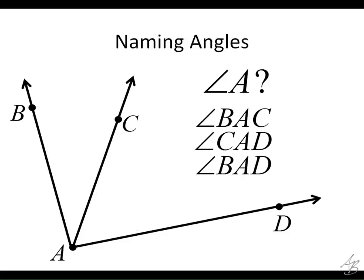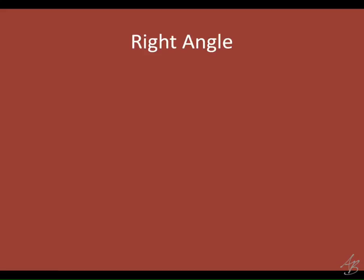Using B-A-D — that looks like it could be a right angle, close to 90 — that would be this whole big angle. So the key point is: we can use just one letter when there's only one angle at a vertex. But if there's more than one angle at a vertex, we need three letters to be clear about which angle we're talking about.